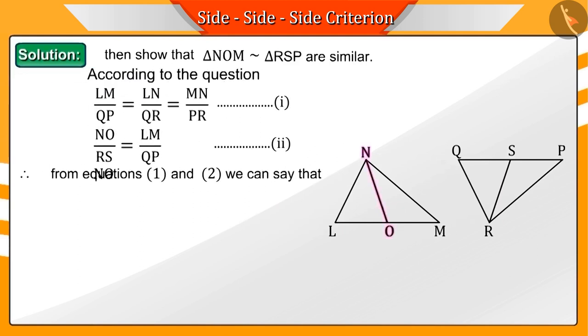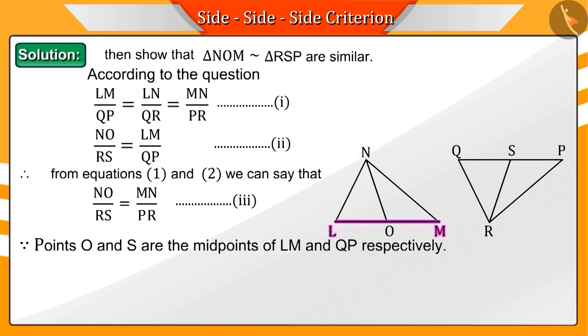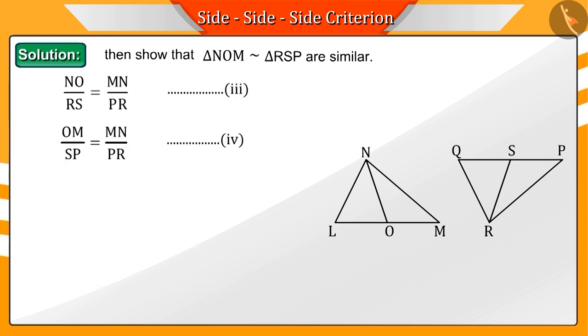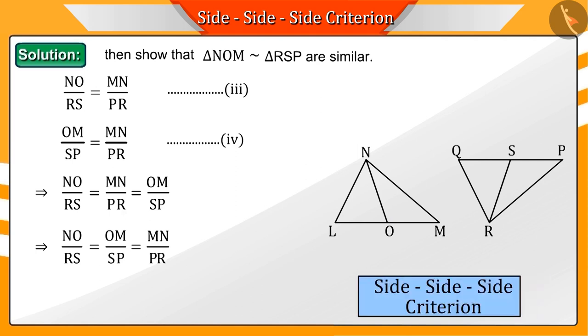Hence, from equations 1 and 2, we can say that NO by RS equals MN by PR, which is represented by equation 3. Because from the figure, we can say that points O and S are the midpoints of LM and QP respectively. Hence, 2OM by 2SP equals MN by PR, which we represent by equation 4. If we compare equations 3 and 4, then we get NO by RS equals MN by PR equals OM by SP. Therefore, by SSS criteria, we can say that triangles NOM and RSP are similar.